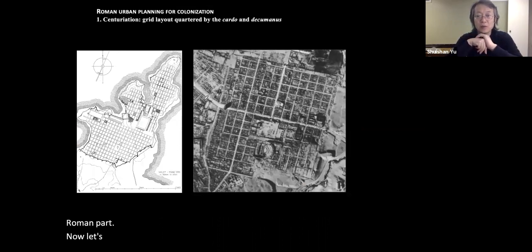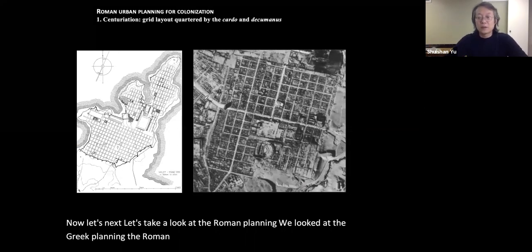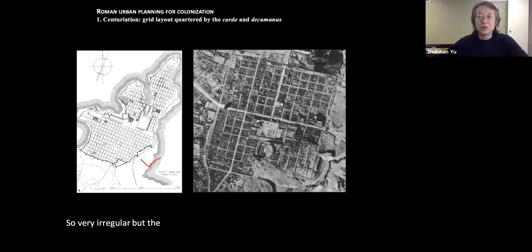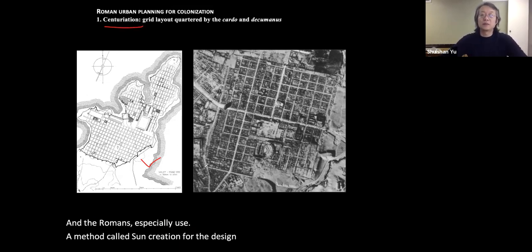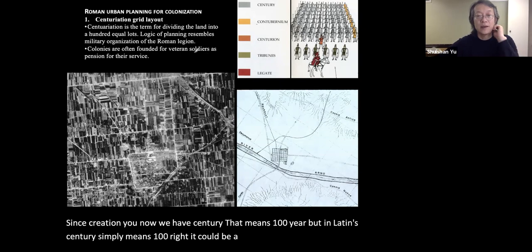Now let's take a look at Roman city planning. Rome itself grew from a small settlement into a big city, so it was very irregular. But planned Roman colonial cities, like planned Greek cities, were very regular. The Romans especially used a method called centuriation for the design of their colony cities. 'Century' in Latin simply means a hundred, and centuriation originally referred to dividing land into a hundred equal lots.